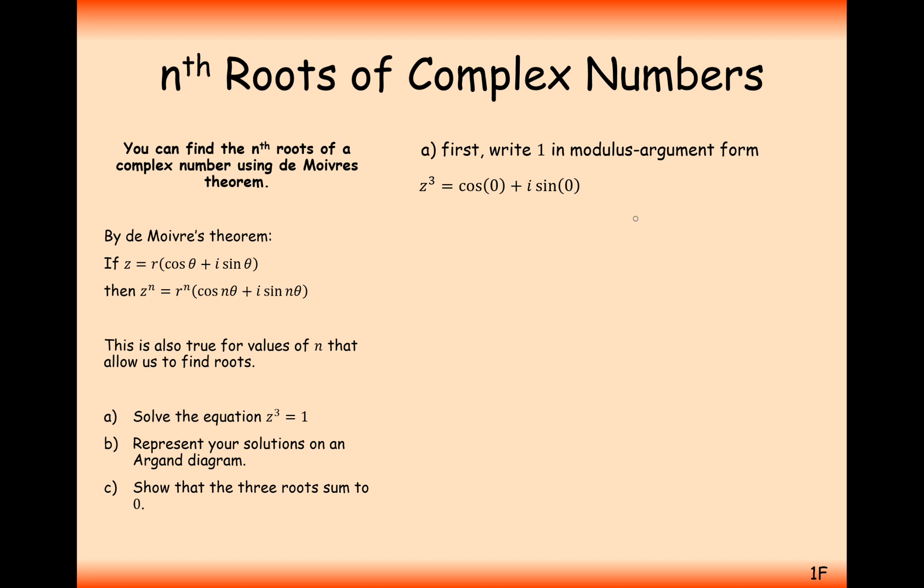It has an argument of 0 and a modulus of 1, and we don't generally write the 1 at the start, because 1 times anything we know is just that anything. Let's now, to both sides of the equation, get rid of this cubed symbol. So we'll cube root both sides. That will give us z equals cos 0 plus i sine 0 to the power of 1 over 3, and then apply De Moivre's theorem by multiplying the third into the argument, and that will give us 0 times 1 third, or 0 divided by 3, and we obviously know that that's going to equal 0.